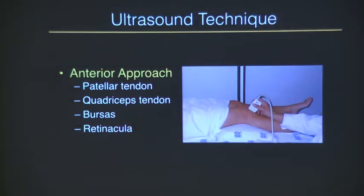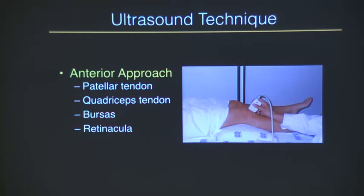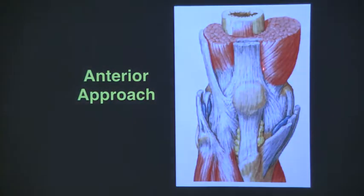So I couldn't bring the ultrasound machine here today, but maybe when we do ankle we can check the knee also. We divide all sonographic technique of the extremities in anterior, posterior, lateral, and medial approaches. Here I am in the anterior approach. You want to put a pillow behind the knee to get some flexion and to avoid anisotropy of the patellar tendon. In this view you can check the patellar tendon, the quadriceps tendon, the bursas, and the retinaculum. This is the quadriceps tendon going to the patella, and the patellar tendon.